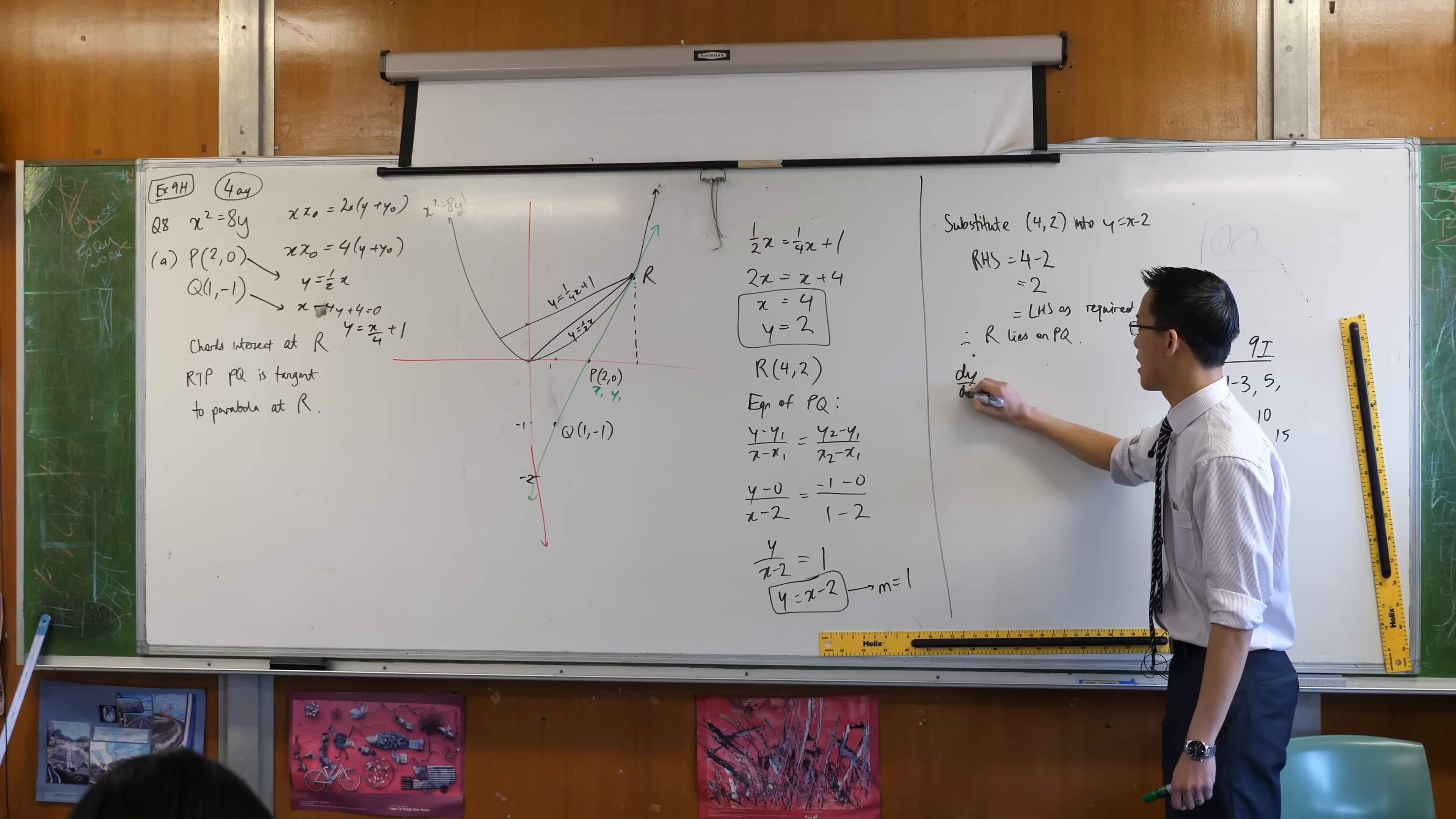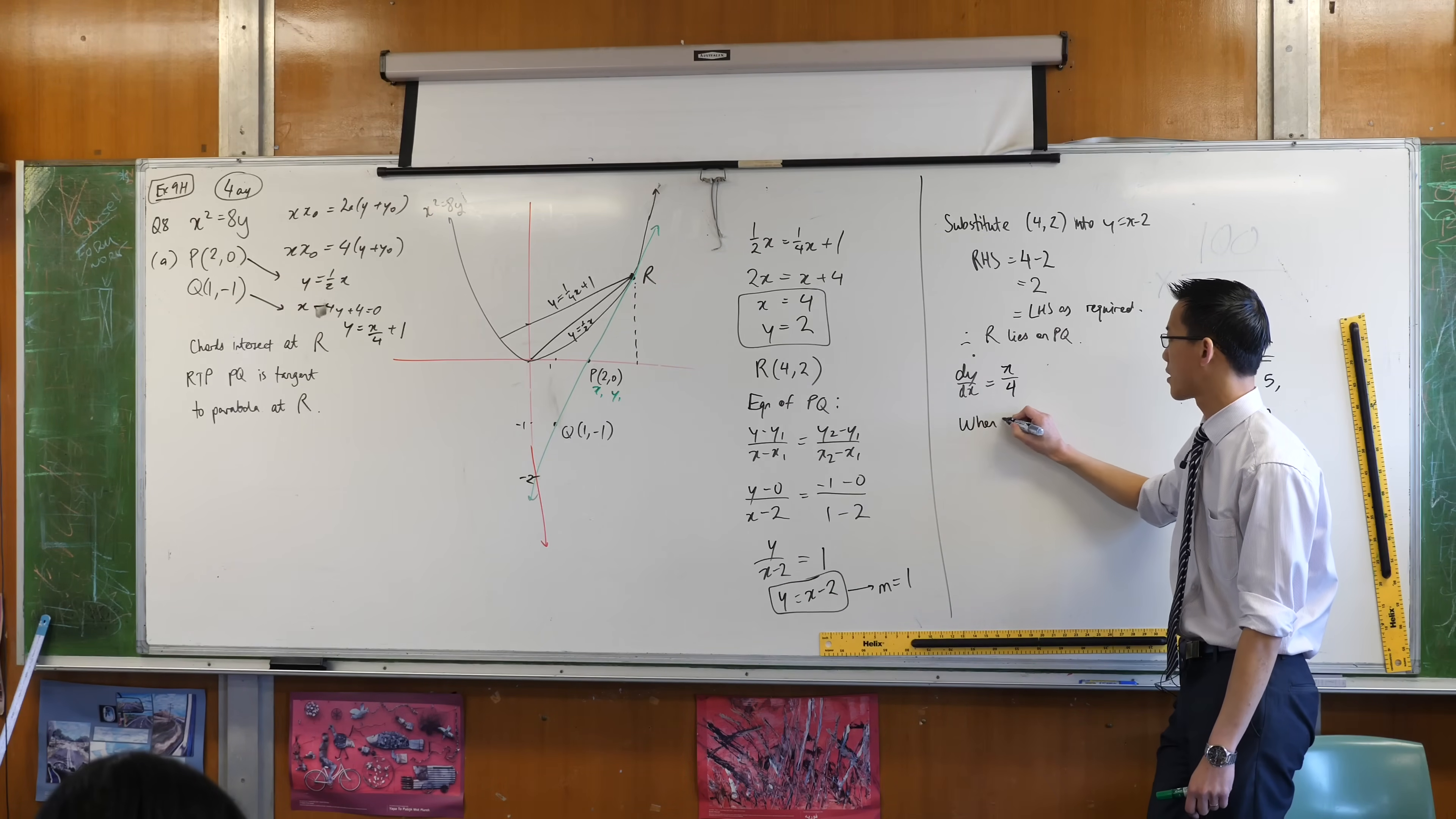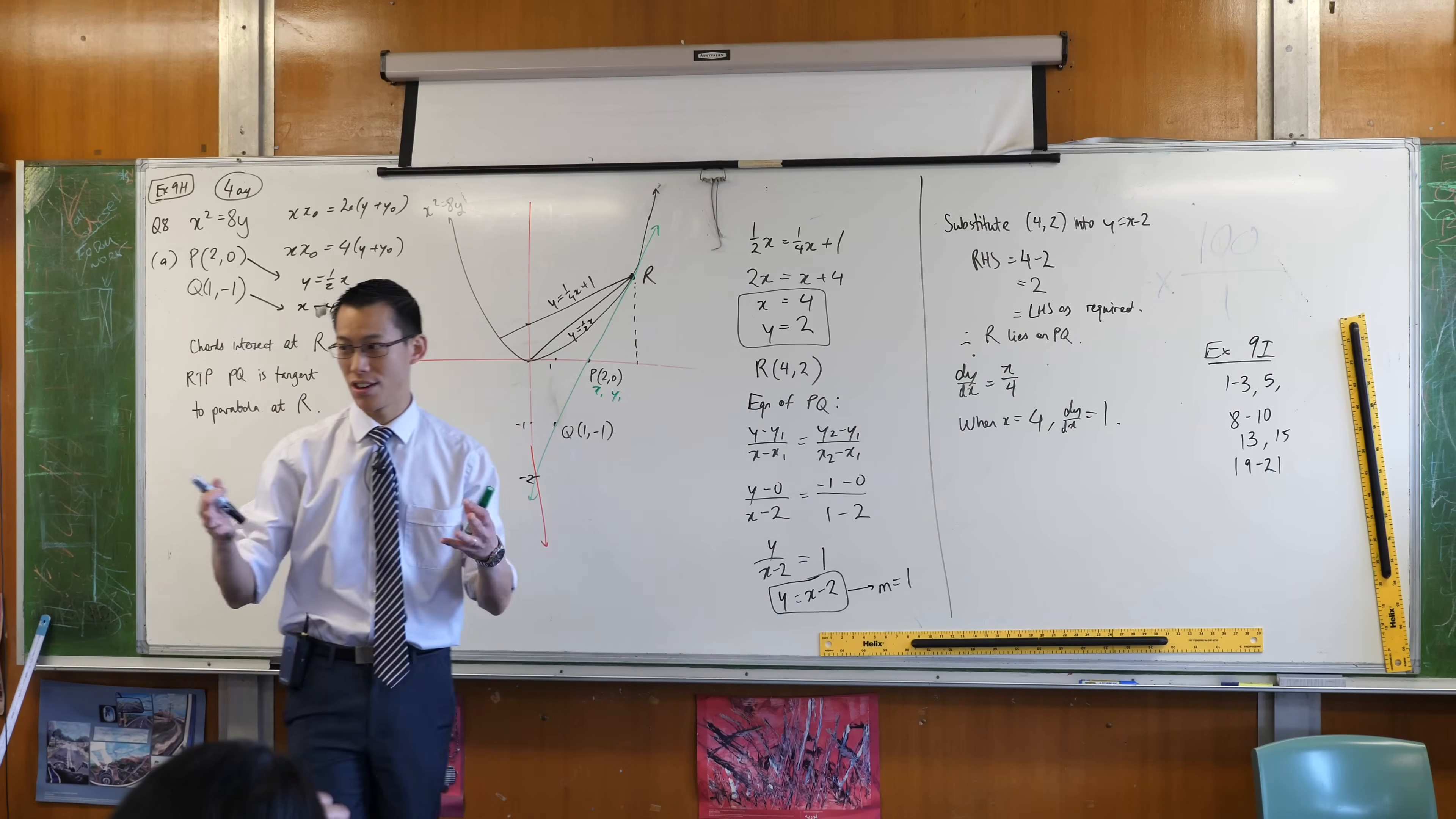So what's dy/dx for this parabola? Yeah, so since the parabola is x² over 8, once I differentiate, I get x over 4. Is that okay? So when x is equal to 4, which is where R is, right? dy/dx equals, surprise, surprise, 1. There we go. I'm done. I found that it goes through there, same gradient, that is exactly what the definition of a tangent is.